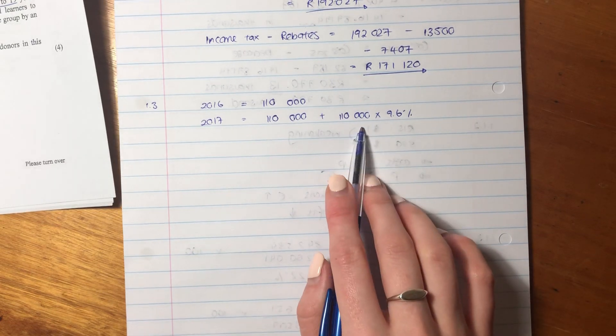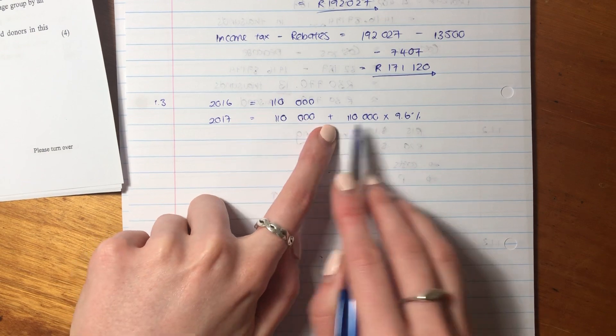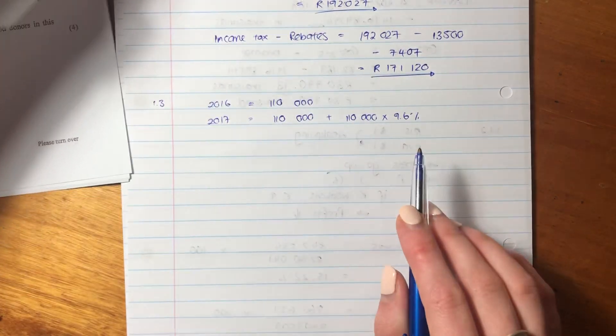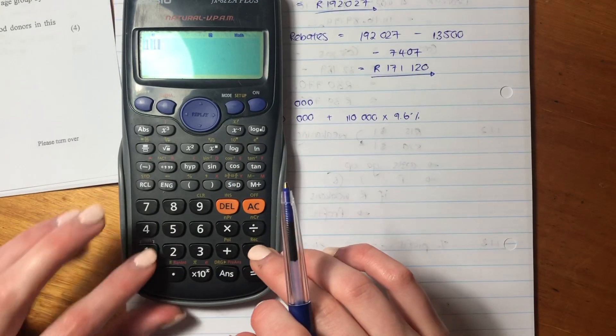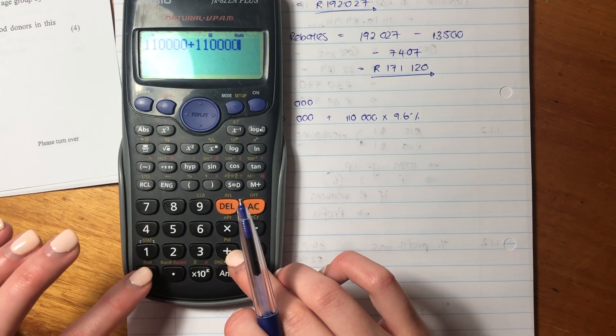So we're going to put there 110,000. That's how much you want, plus this increase in that amount, okay? So let's put that into our calculator, plus, make sure you type it in correctly.